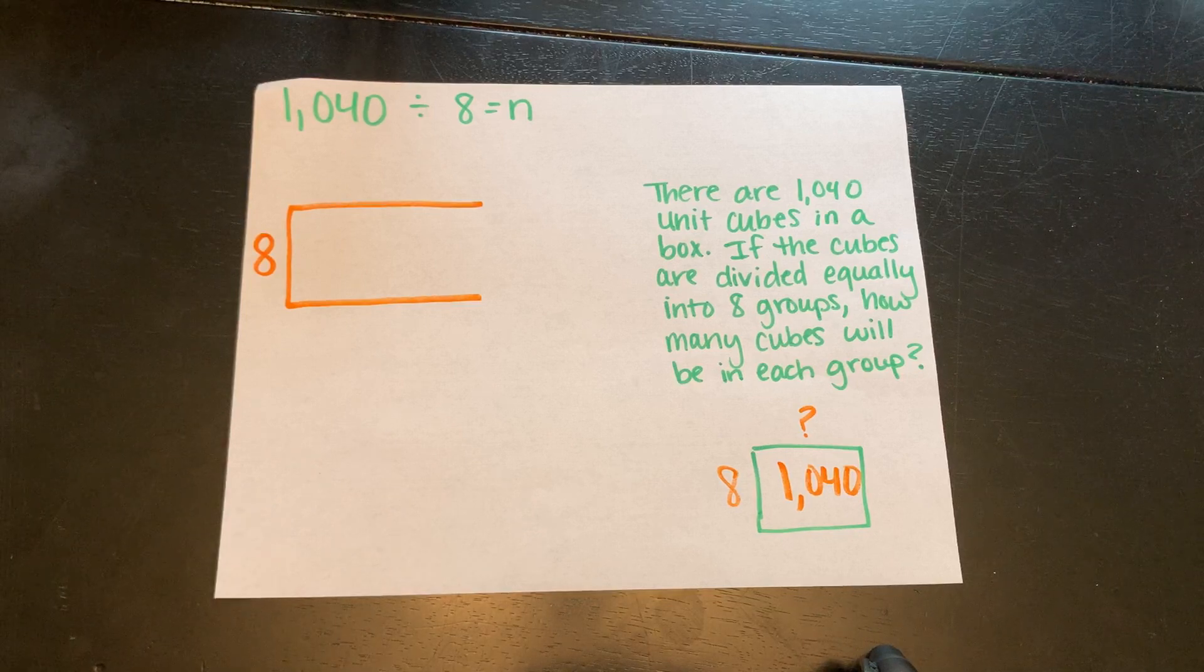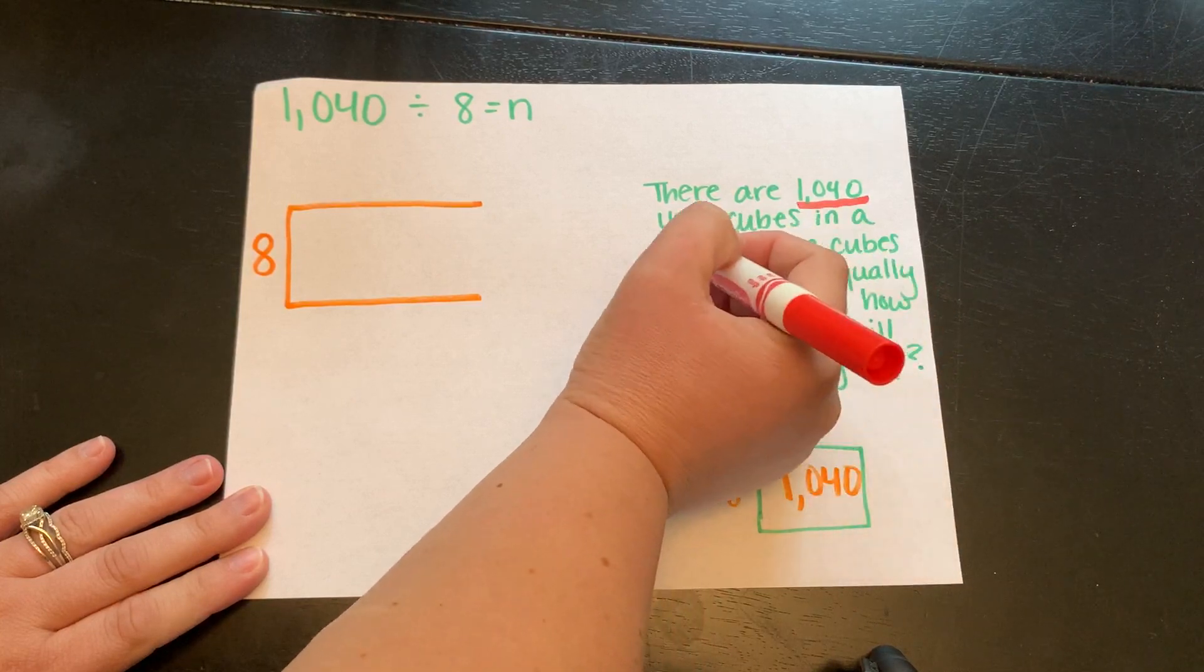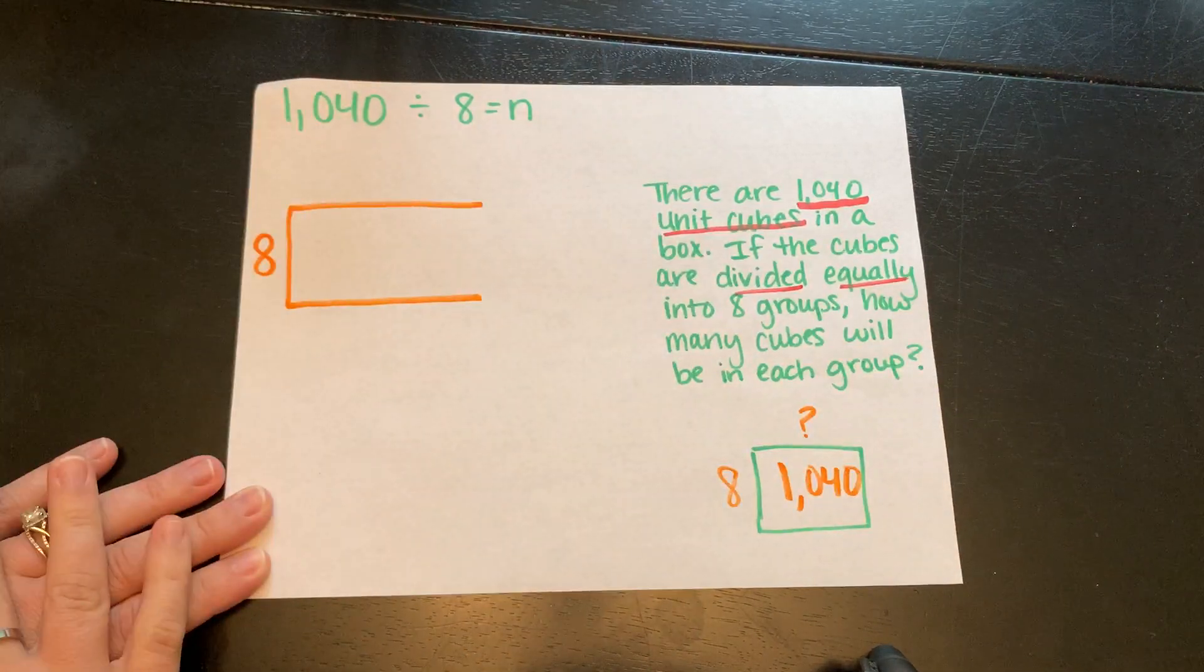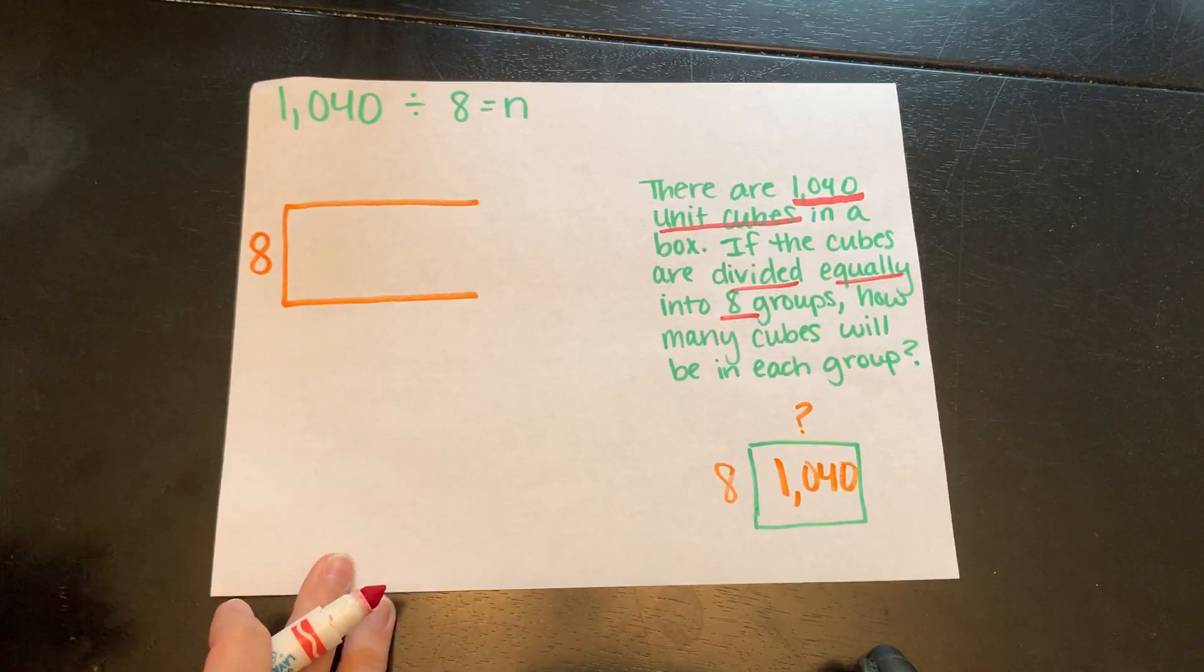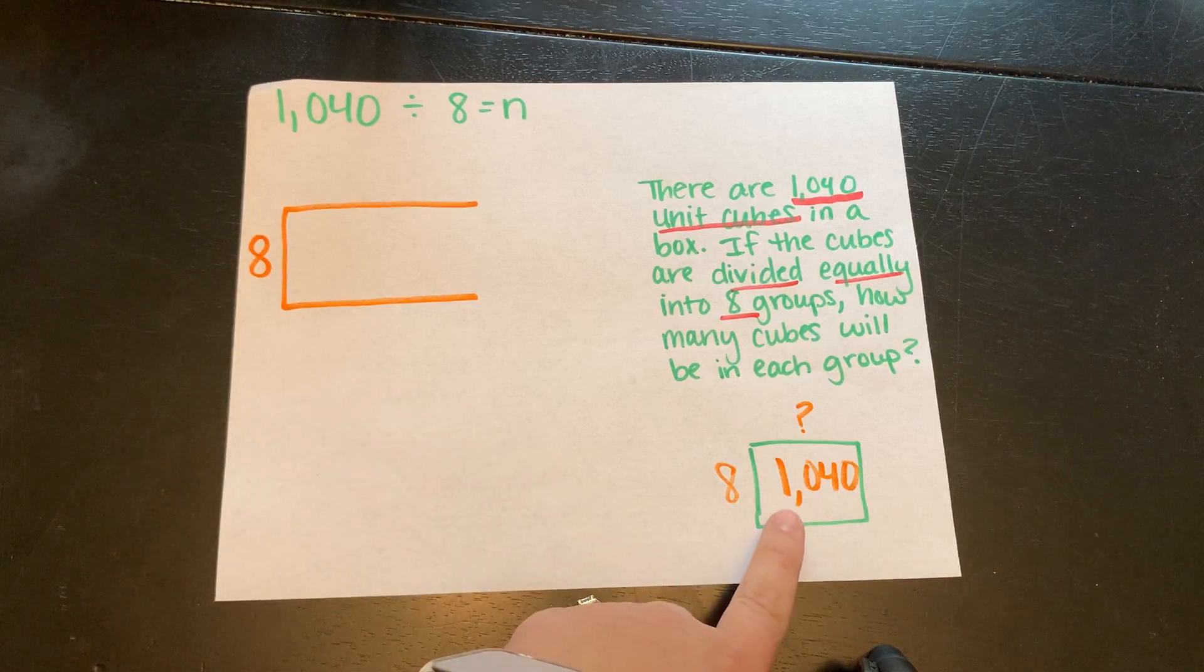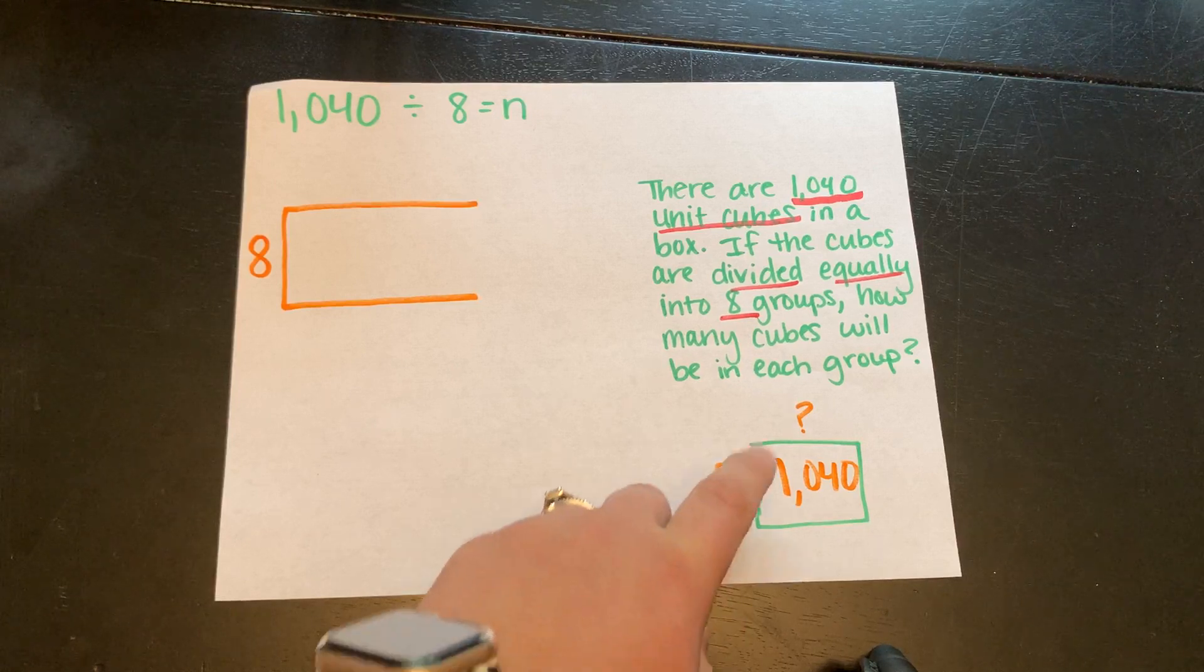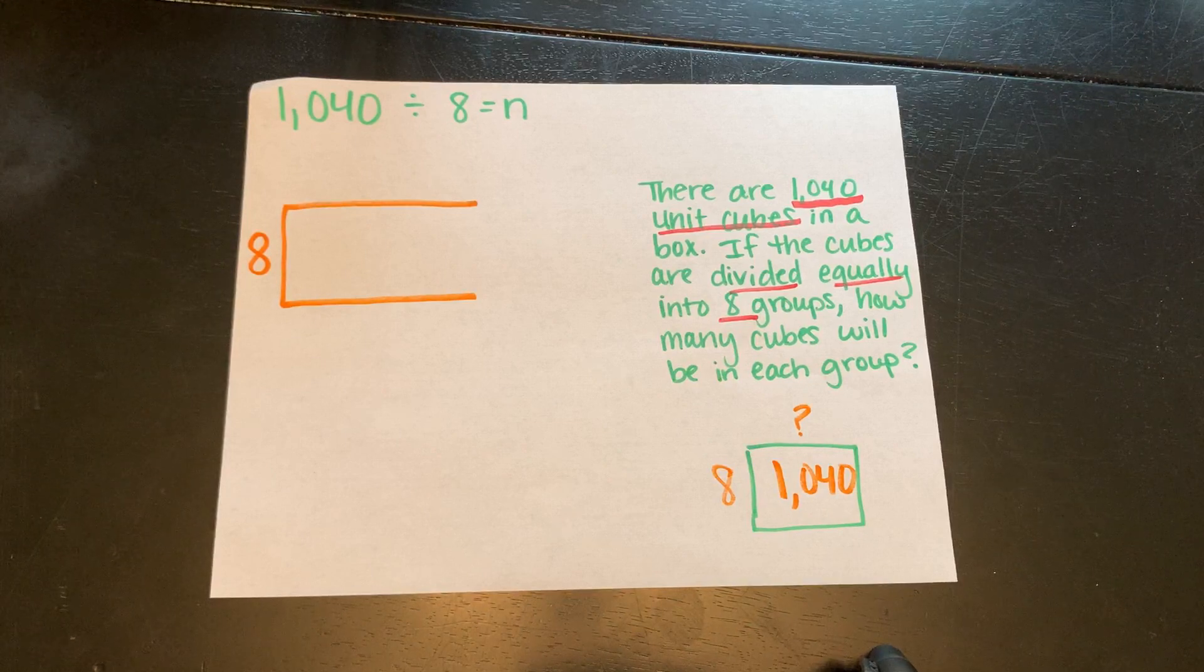Again, you may pause your video and do your three-read strategy. I know that there are 1,040 unit cubes in a box. That's important. And something that stood out to me was it said if the cubes are divided equally. So that gives me a hint that we're doing division. And then we're dividing it equally into 8 groups. Those are all things that are important for me to solve my problem. When we're making our array, know that the inside of our array will have the total amount of 1,040. That's the amount that we're distributing evenly. Our divisor goes on the outside of our array and the unknown is up top. That's where we're going to find our partial quotients and add those together to find our final quotient.